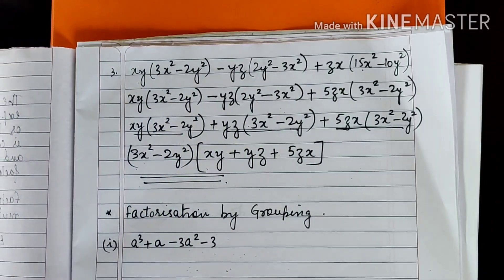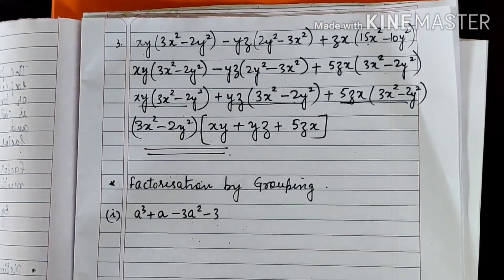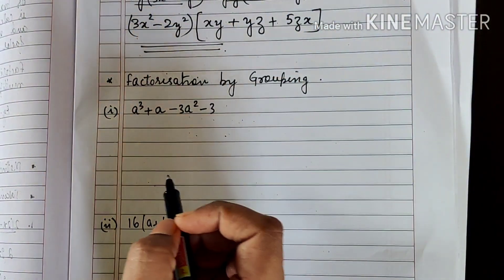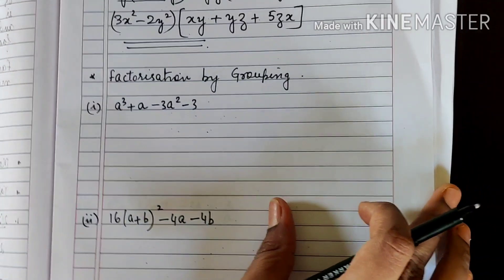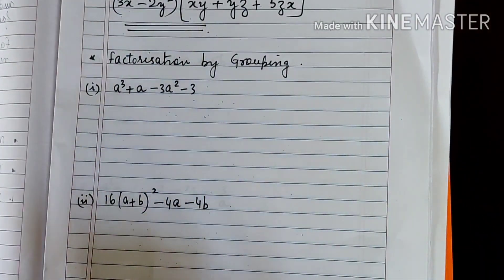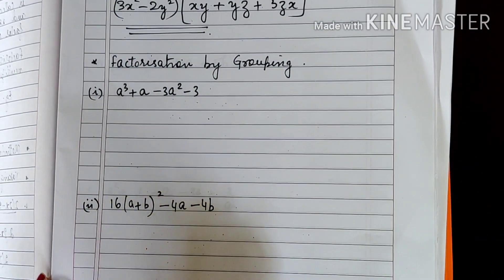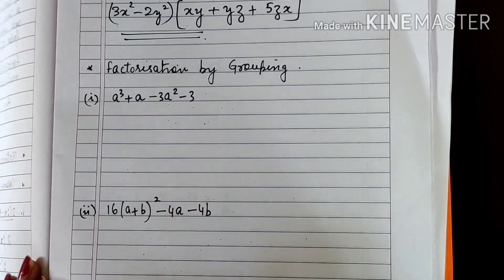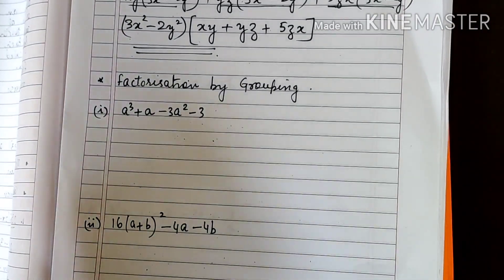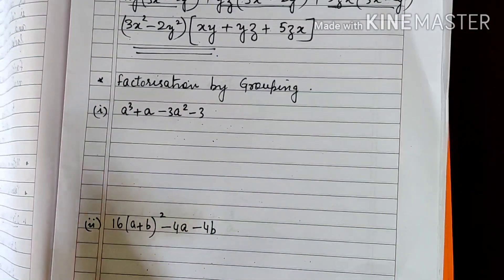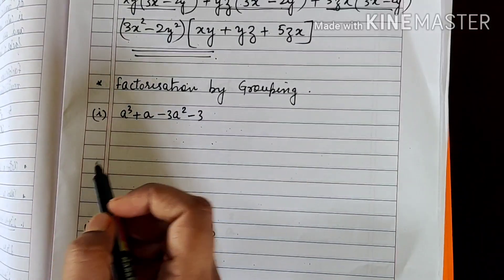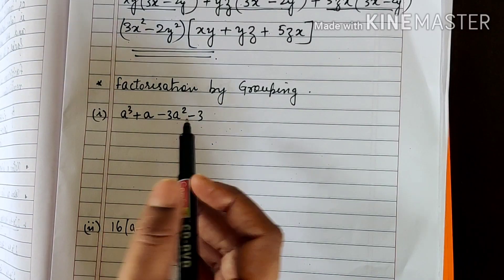This is called factorization by removing the common factor. The next method is factorization by grouping — we group certain terms and then do the factorization.